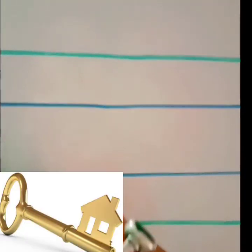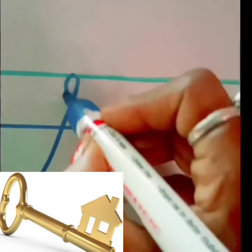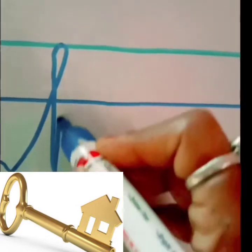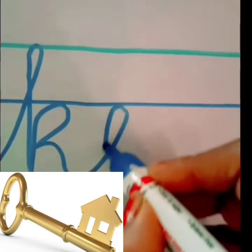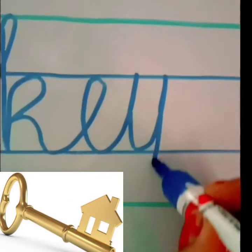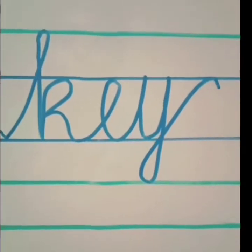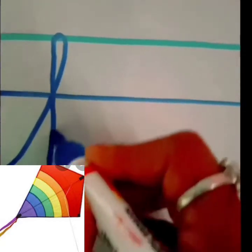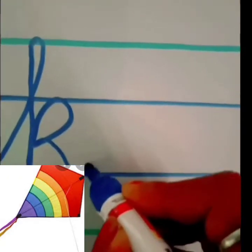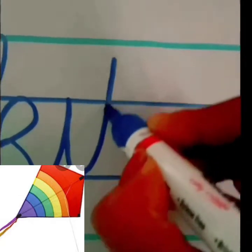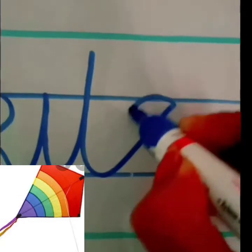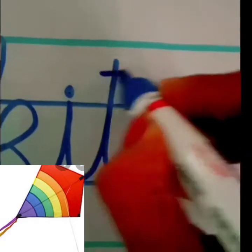After that, K. K for key. K, E, Y, key. And K for kite. K, I, T, E, kite.